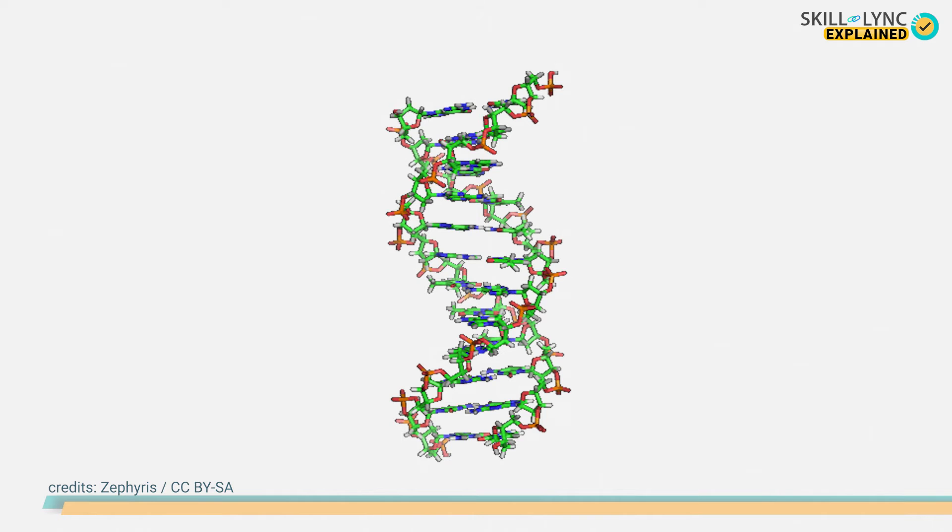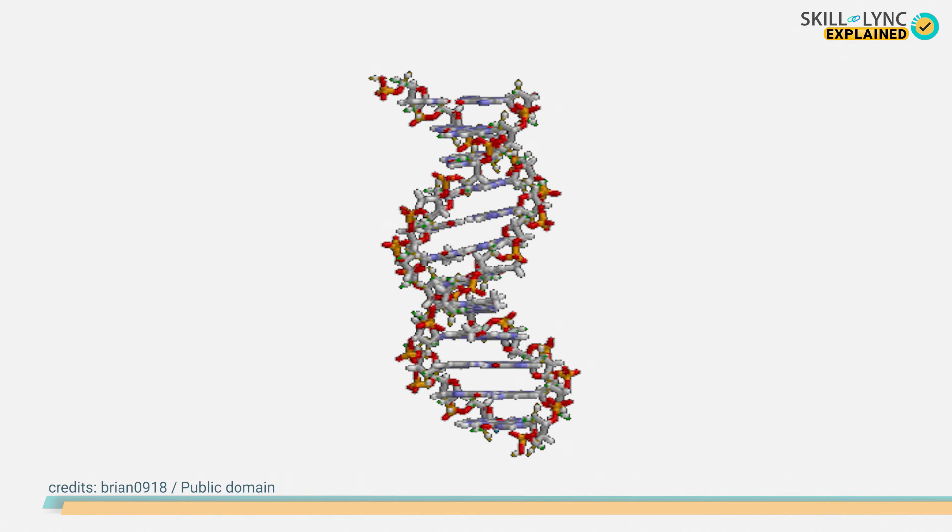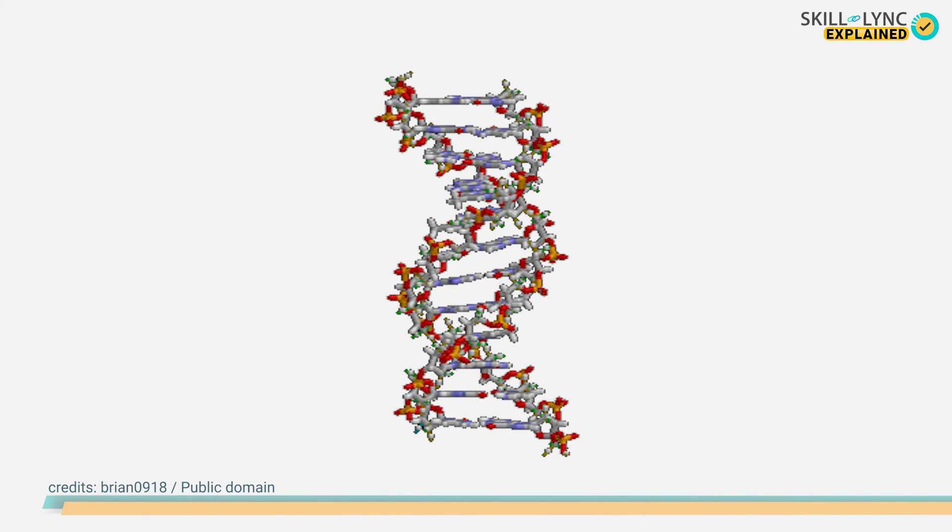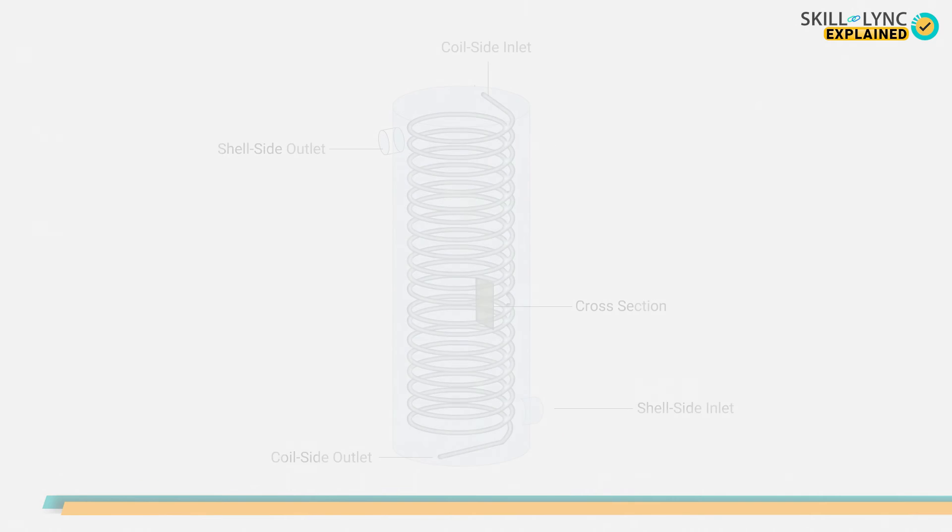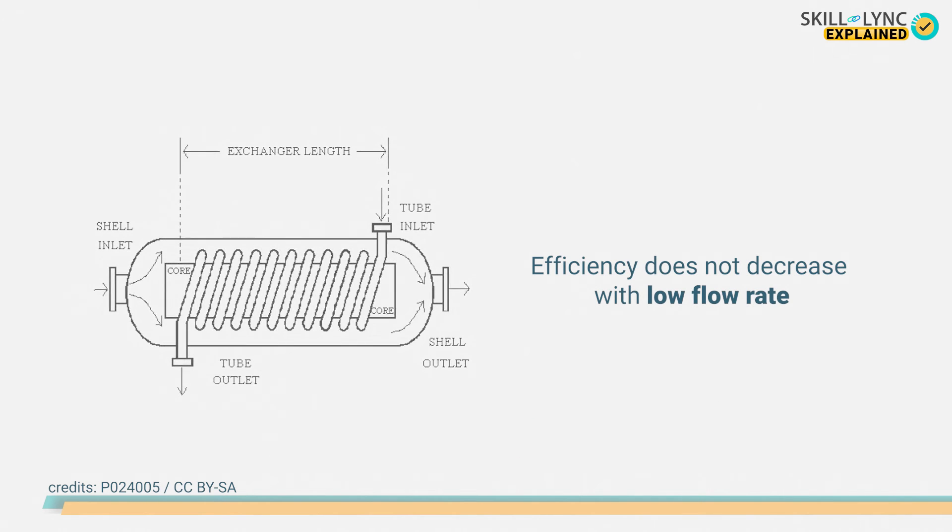The DNA strand in itself is very long. To pack such a long strand effectively, the strand coils itself in a helical pattern called a double helix, thus using up the available space much more effectively. Similarly, the helical coil heat exchangers use up space very effectively. The coiled tube carrying the liquid is placed in a shell that carries another liquid.